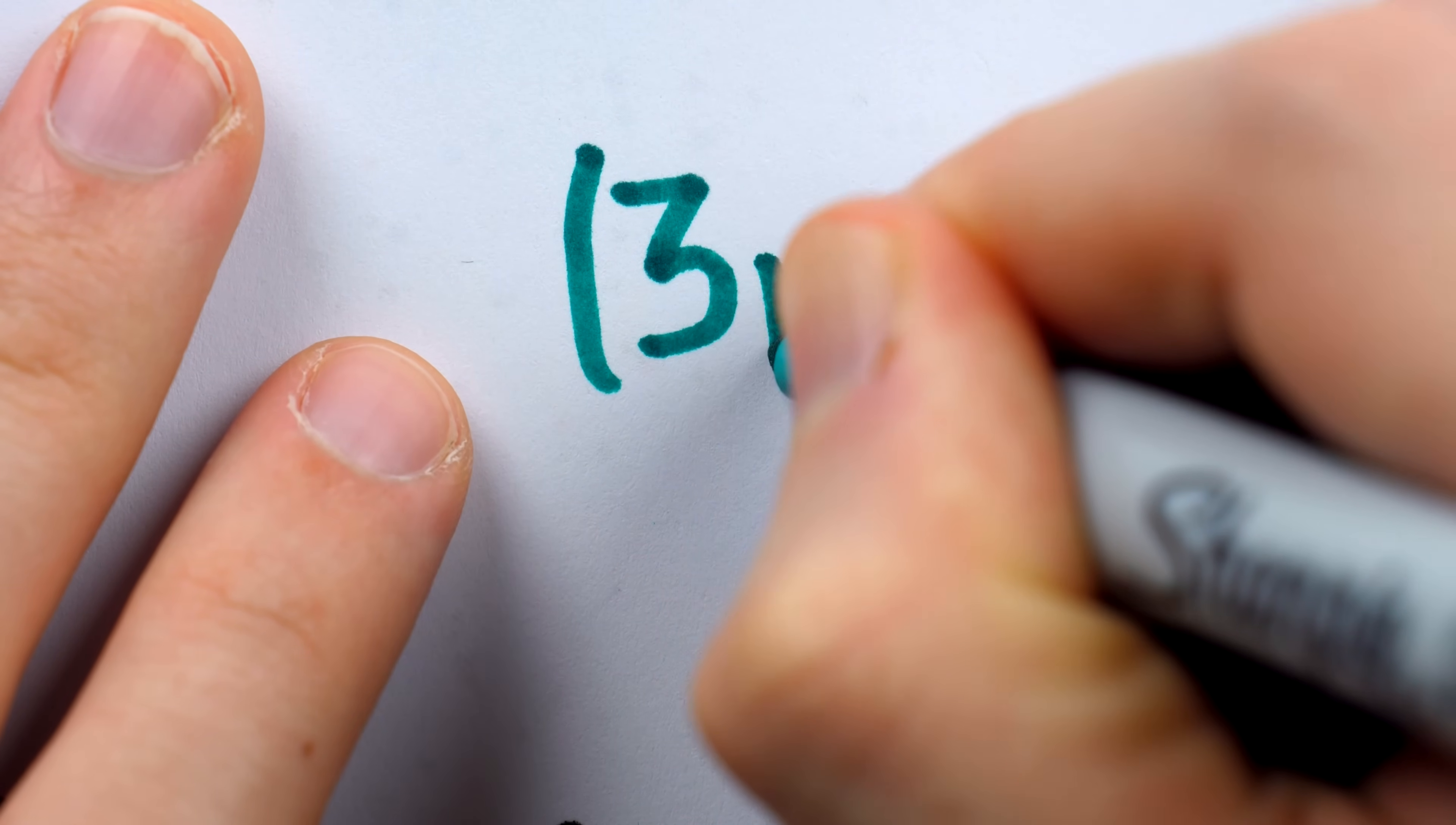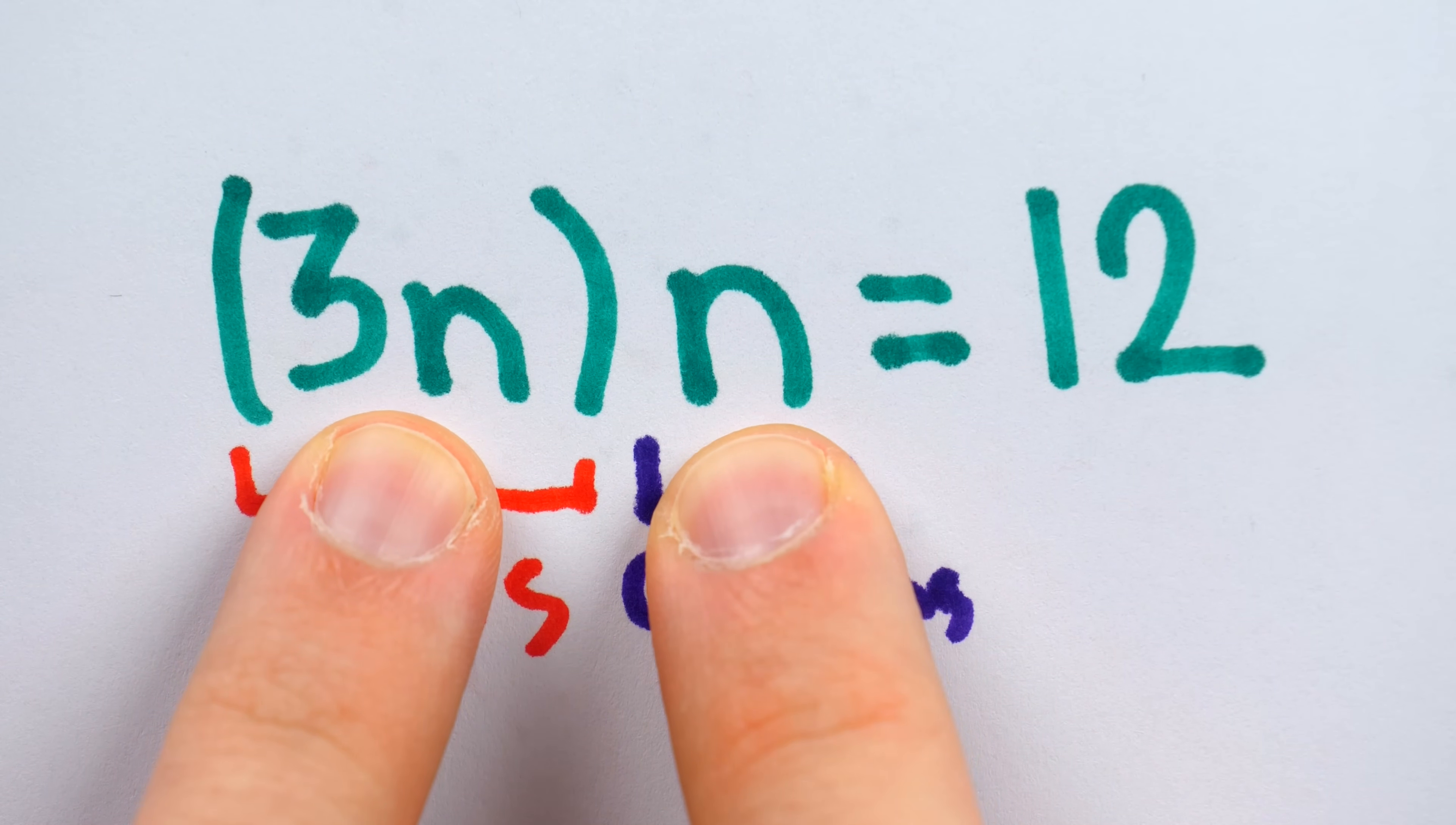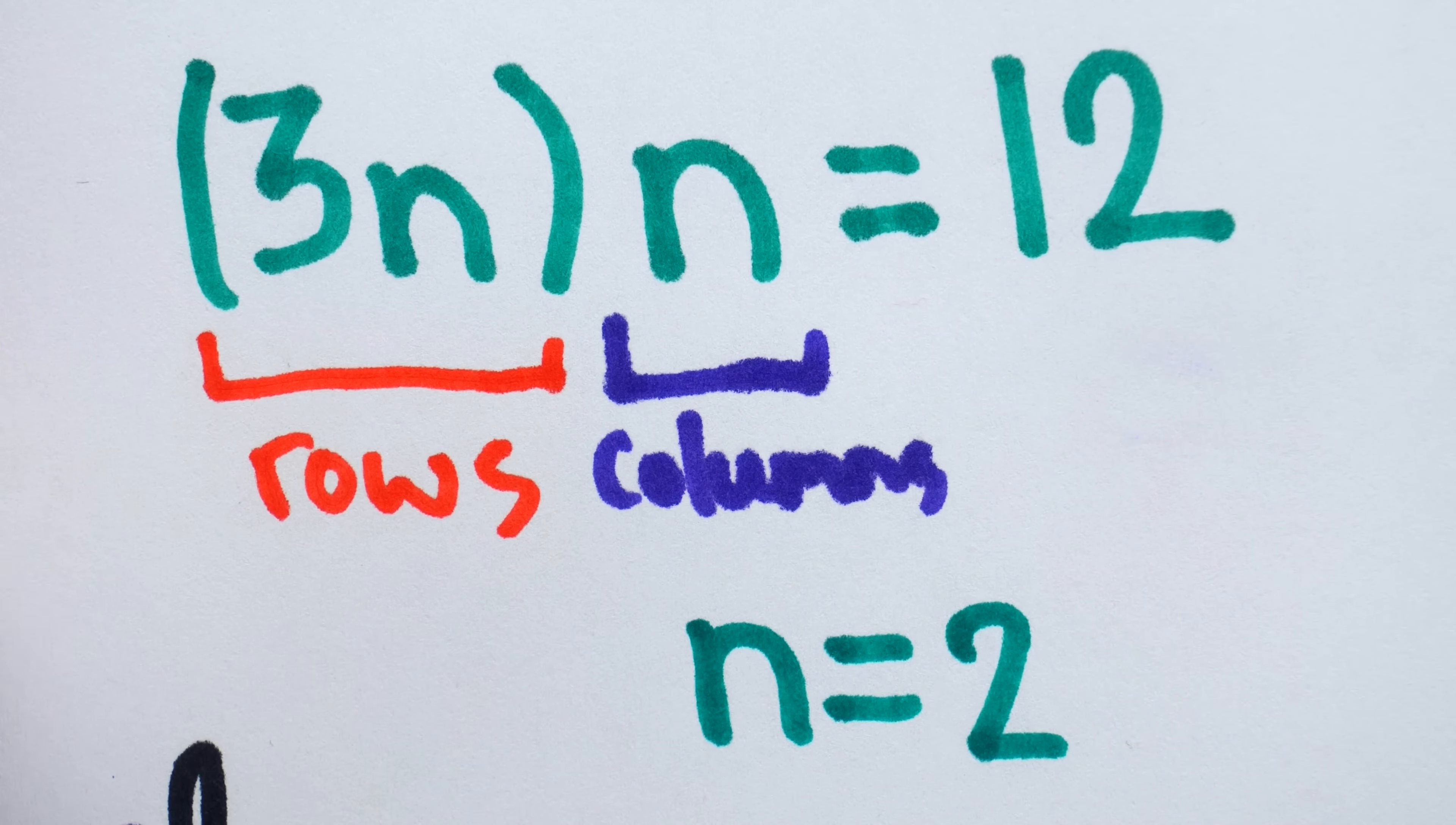Having had our foolish perspectives fixed, we know that the number of columns, n, must satisfy the equation 3n times n equals 12. This 3n is the number of rows, n is the number of columns, and their product must be the number of objects in the array, which is 12. Of course, we can't have negative numbers of columns, so this equation immediately implies that n is equal to 2, and so the number of rows is 6.